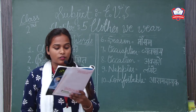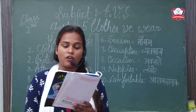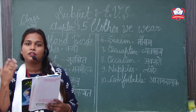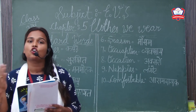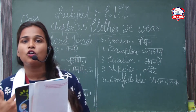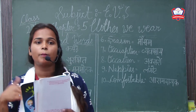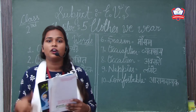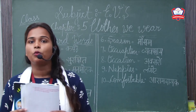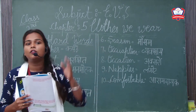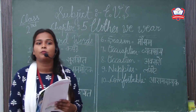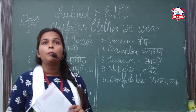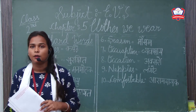They tell us the kind of work a person does — this is insan ka occupation hota hai. For example, I am a teacher and I wear a teacher uniform. If a person is a policeman, he wears a policeman's dress. We identify people according to their dress.